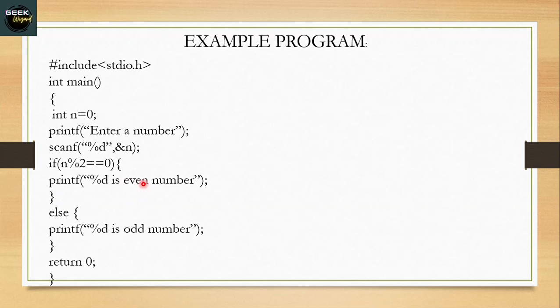Now this program is basically to check if a number is even or odd. So if we have entered a number, for example if I have entered 4, if 4 mod 2 equals 0, then printf